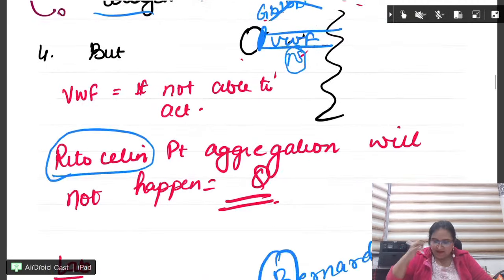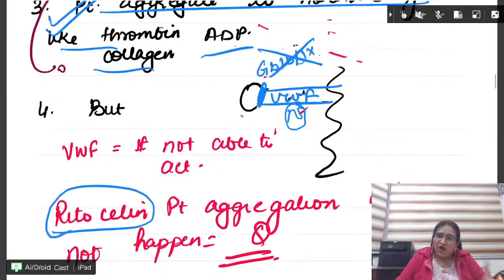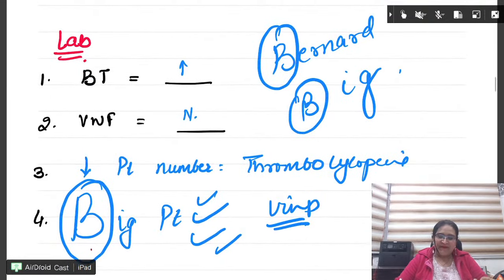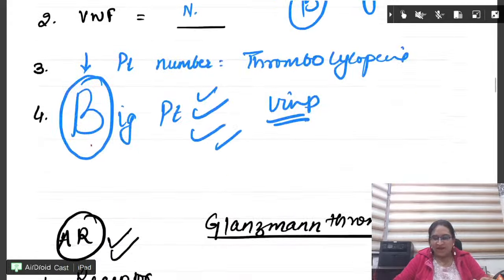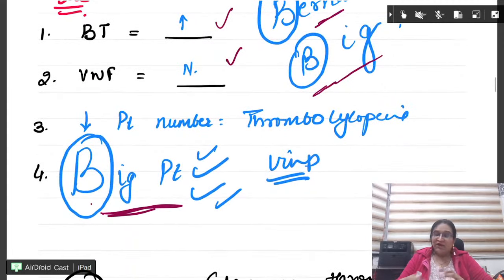You should know that normal platelet size is in Glanzmann. Whereas Bernard has big platelet. And because the platelets are very big, their number is going to be little less. Bernard - big platelets. Remember bleeding time ko kya hota hai von Willebrand factor ko apply your brain and here remember, big platelet.